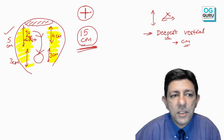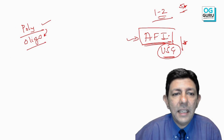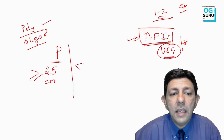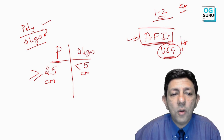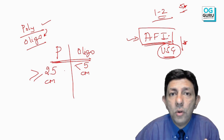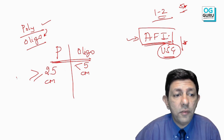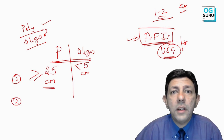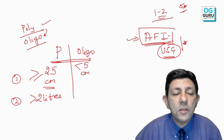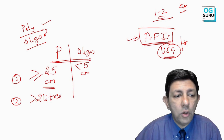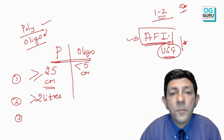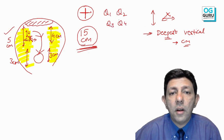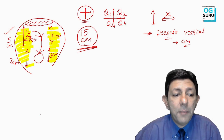There are three definitions for polyhydramnios. First: AFI more than or equal to 25 cm. Second: overall quantity of liquor more than two liters. Third — a newer criterion — uses the Single Vertical Pocket (SVP). AFI is a four-quadrant measurement, but instead we can also assess a single deepest vertical pocket, also called the Maximum Vertical Pocket (MVP).